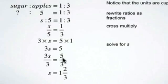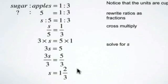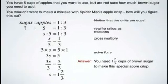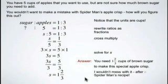Three goes into five once with two left over, giving one and two thirds. This really does make sense because when you're cooking you'll use one and two thirds cups — you're not going to work with decimals. So the answer is you need one and two thirds cups of brown sugar to make this special apple crisp.